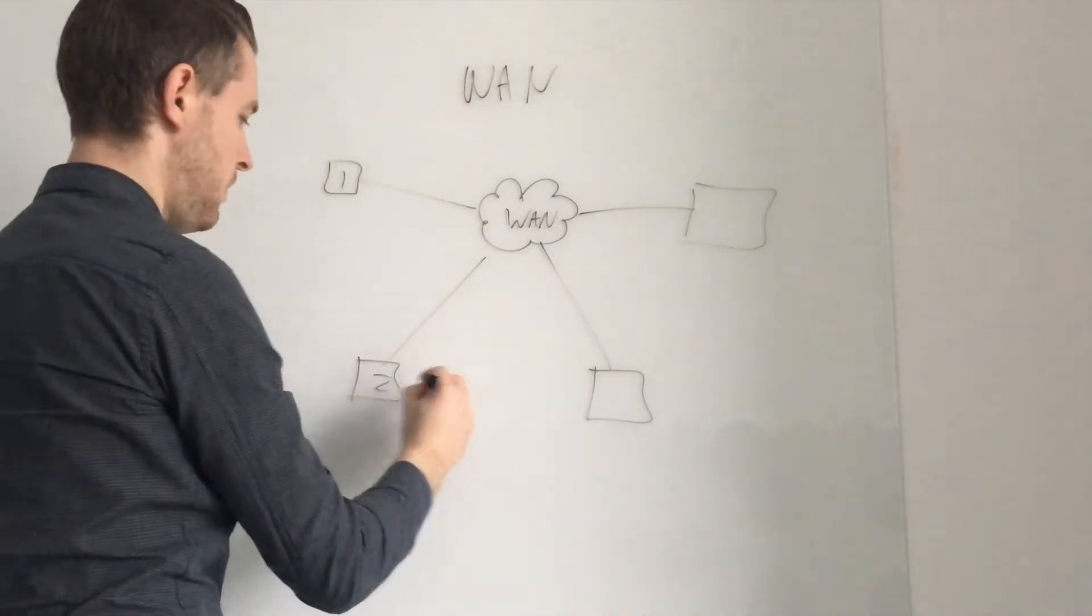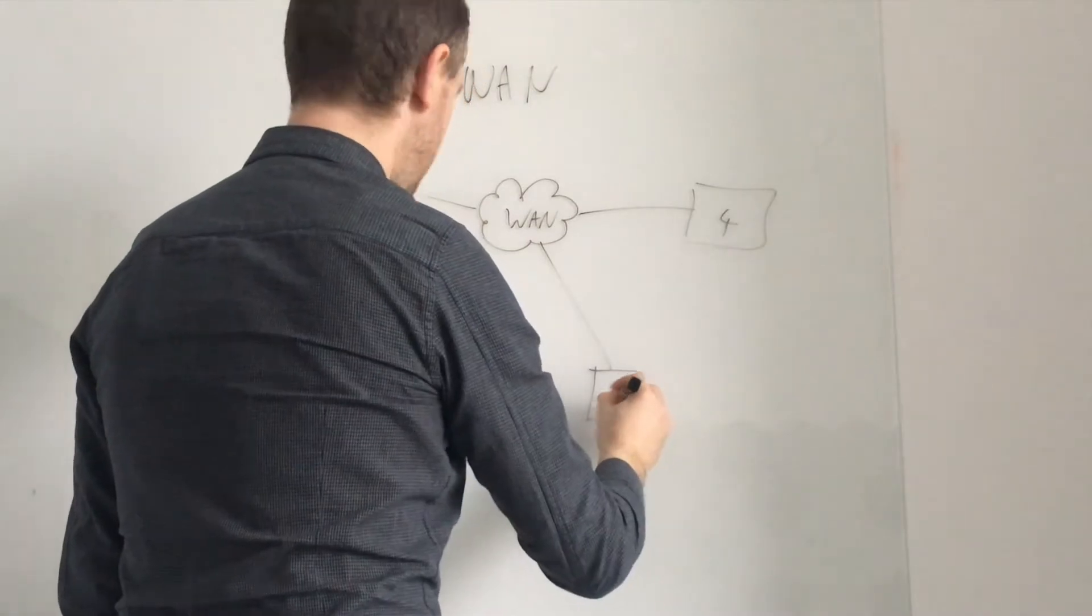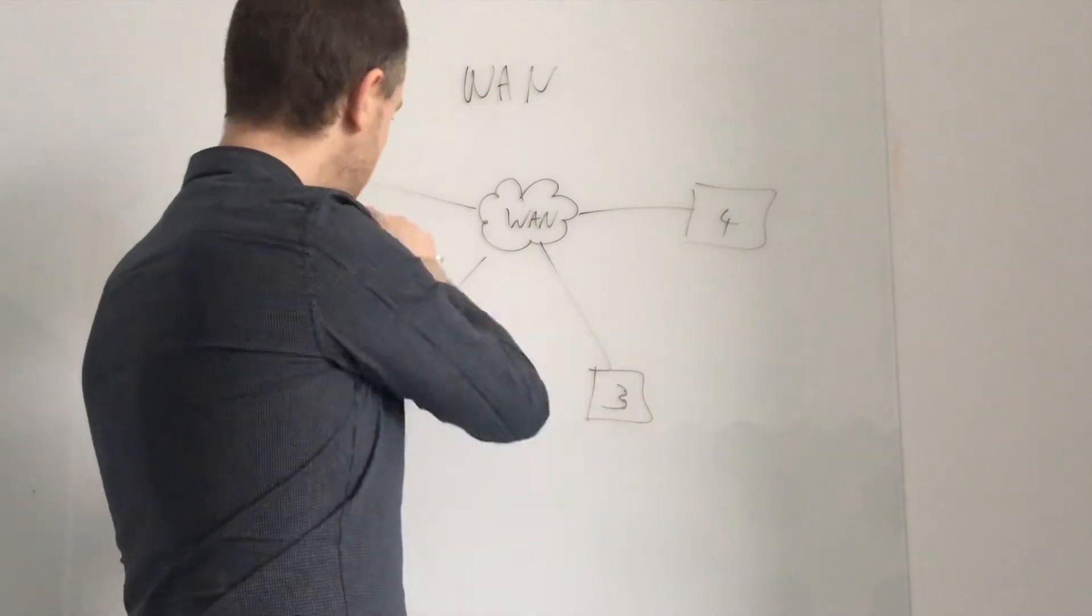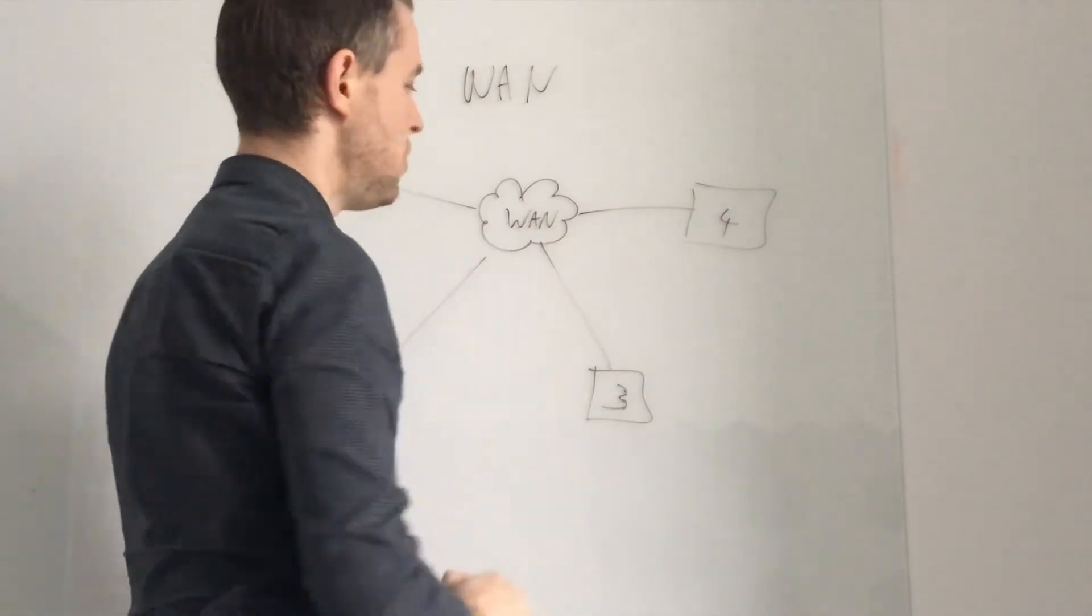One, two, three, four and of course each of these in turn would have all of their own IT infrastructure connected into each of these and then out to your WAN.